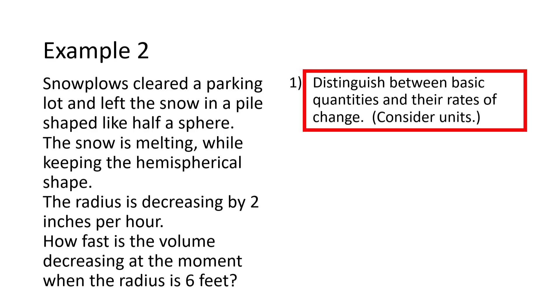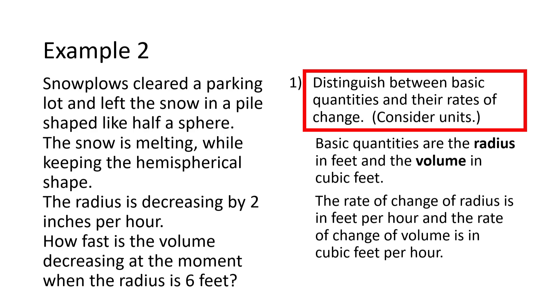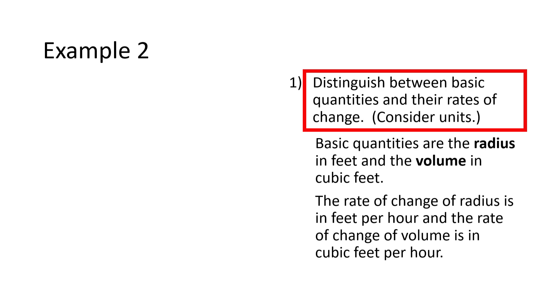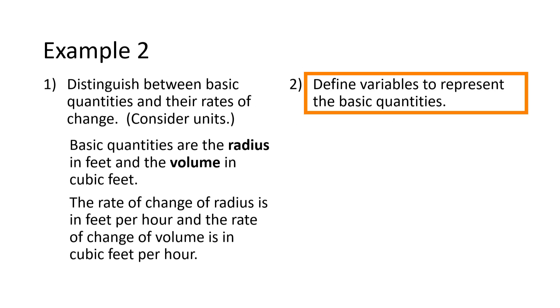We have information about how large the pile is and how fast it is melting. The basic quantities are the size information: radius in feet and volume in cubic feet. We start with these basic quantities and get to their rates of change later. I'm going to name the radius r and the volume V.